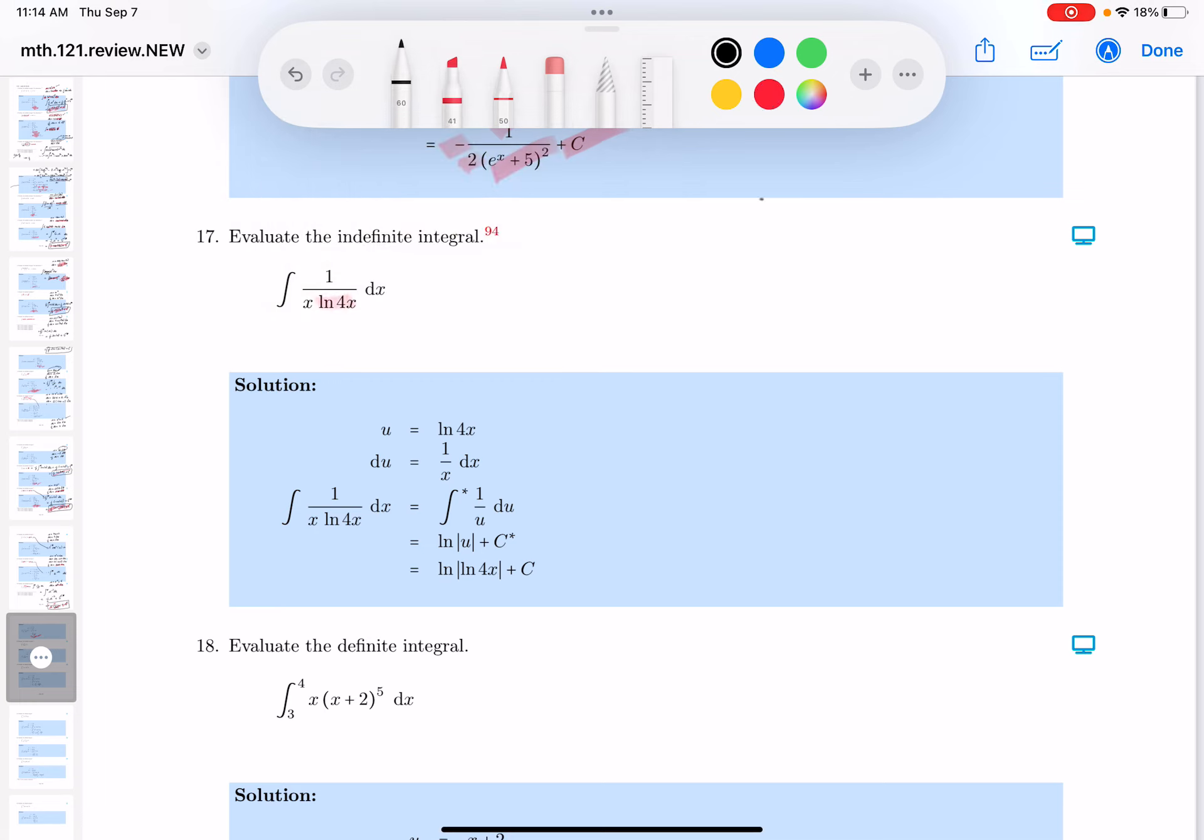I'll write this over here. U is equal to the natural log of 4x. Let's write down du. It's 1 over its argument.